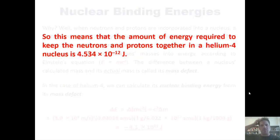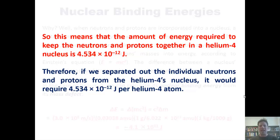In essence, the amount of energy required to keep neutrons and protons together in a helium-4 nucleus is 4.534 × 10⁻¹² joules. That also means that if you wanted to break apart a helium atom and separate its individual neutrons and protons, it would cost you that exact same amount of energy per helium-4 atom. Make sense? Good.